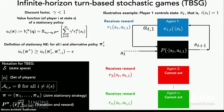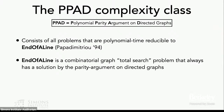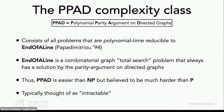Before getting into details, I want to give a high-level aside on the PPAD complexity class. PPAD consists of all problems polynomial-time reducible to a certain combinatorial graph total search problem called End-of-the-Line. The very important high-level thing to know is that a solution is always guaranteed to exist — this is part of the class of total search problems. PPAD is easier than NP, but still believed to be much harder than P. For all practical purposes, we tend to think of PPAD as essentially intractable.